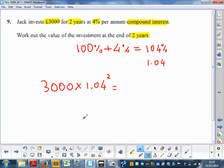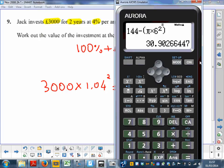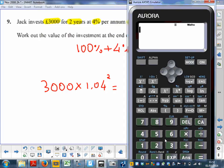So if I do this on my calculator, it would be 3,000 times 1.04 squared. Basically, this would be my investment at the end of the 2 years. So you can write this as the answer.